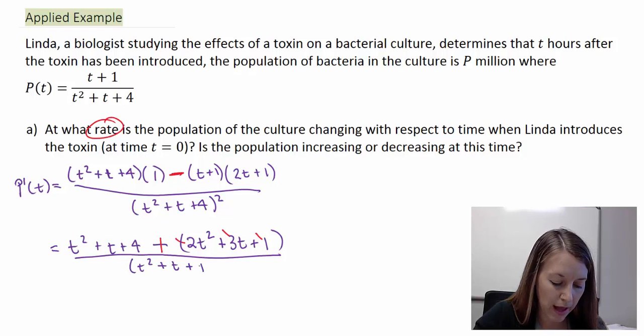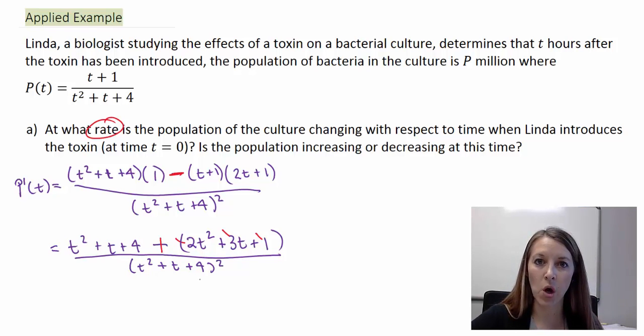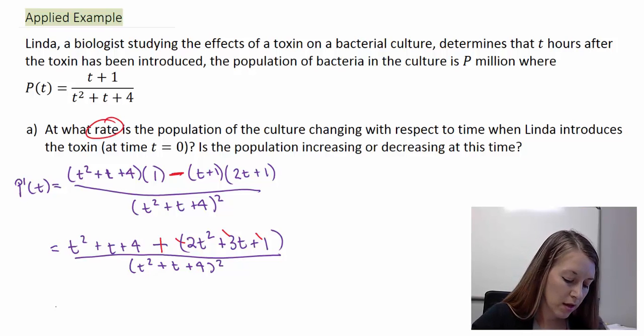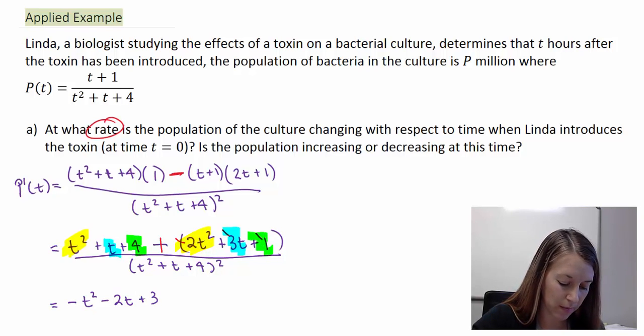Then we know that we are subtracting all of that, which means we have to distribute this negative. So let me change this to a plus and let me distribute my negative all the way through. And that is all over the original of the bottom squared. Now we can multiply out this bottom, but we know that the factored format is always the best. So now in the numerator, we just need to combine like terms.